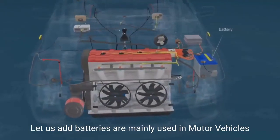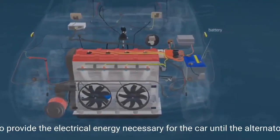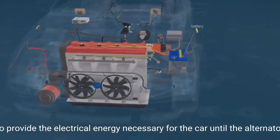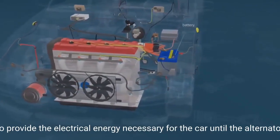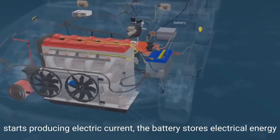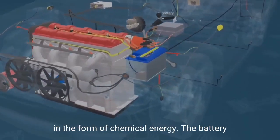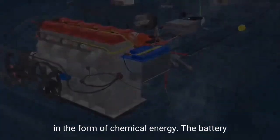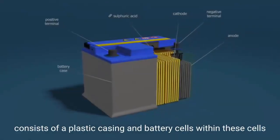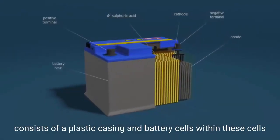Lead-acid batteries are mainly used in motor vehicles to provide the electrical energy necessary for the car until the alternator starts producing electric current. The battery consists of a plastic casing and battery cells.